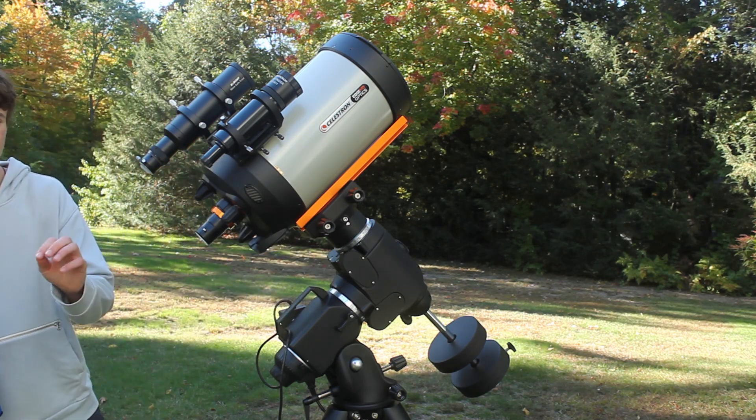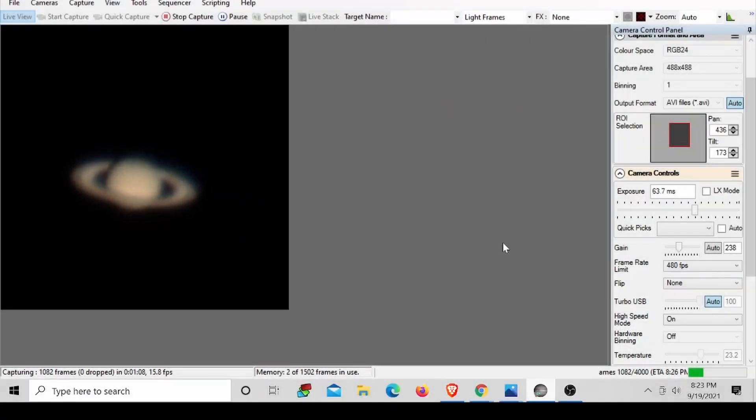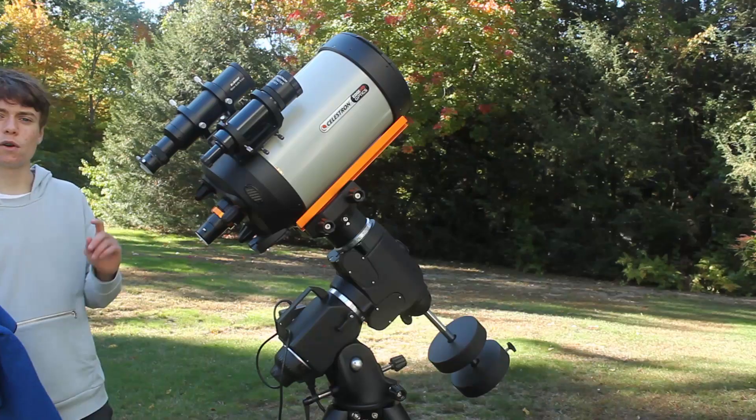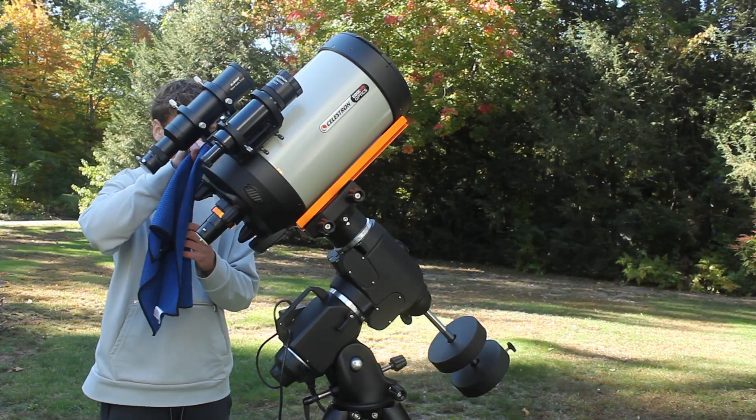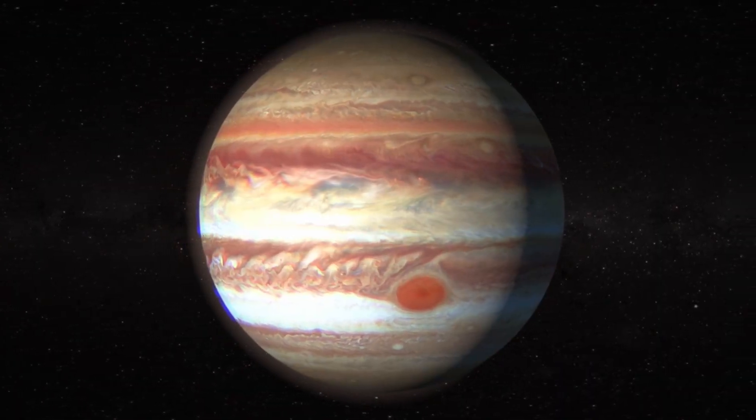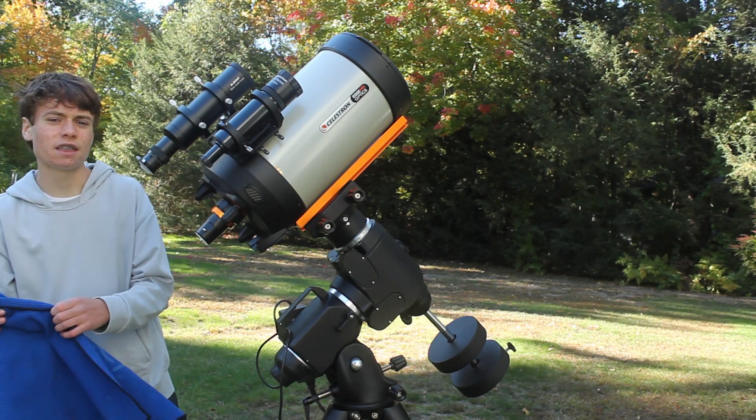Once you're collimated, then you're good to go with the planets. All you need to do then is make sure you have that focus spot on. Focus is very important with planets. I recommend: don't focus on a star or the moon - focus on what you're imaging. Don't focus on the moons of the planet, focus on the actual planet. If it's Saturn, focus on those rings. If it's Jupiter, focus on those belts. You want to focus on the thing that you're actually going to be imaging.